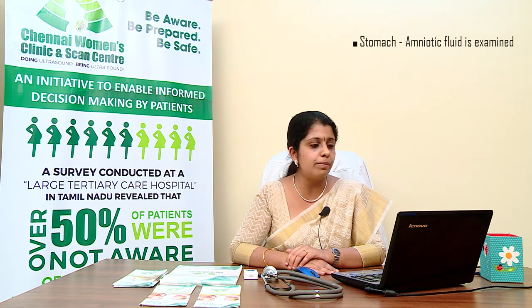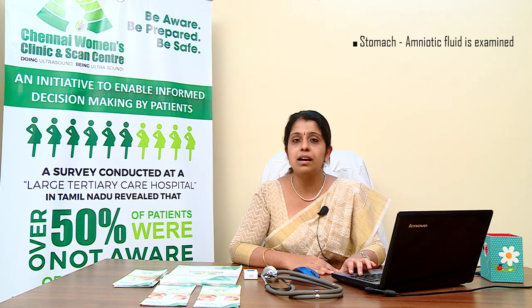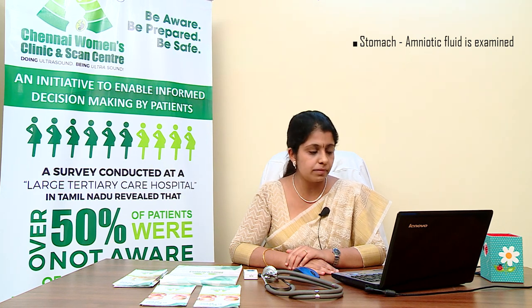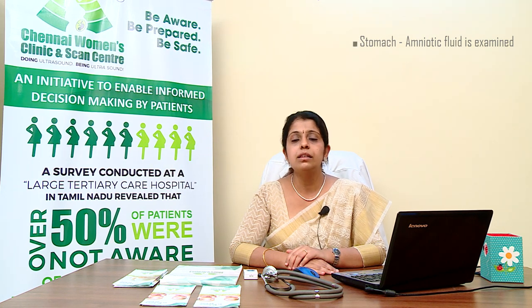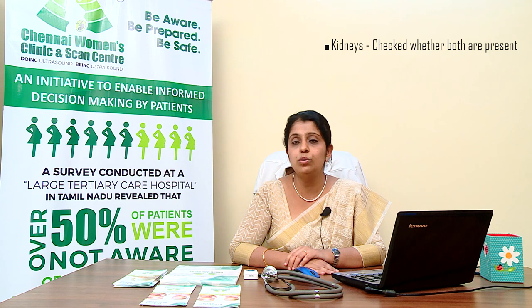The baby's stomach: the amniotic fluid is swallowed by the baby and is visible on the ultrasound as the stomach of the baby. The baby's kidneys: there are usually two kidneys, one on the right side and one on the left side. The specialist will check if both kidneys are present and if the urine flows freely into the bladder.